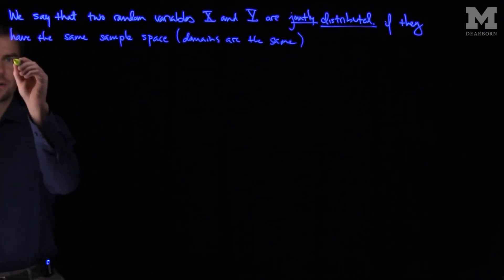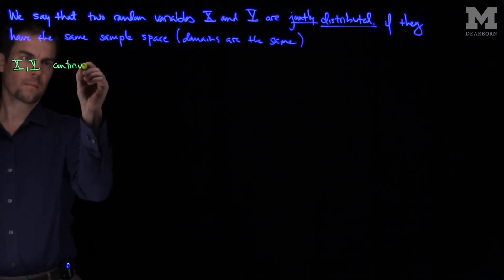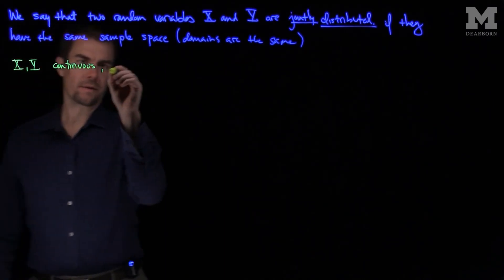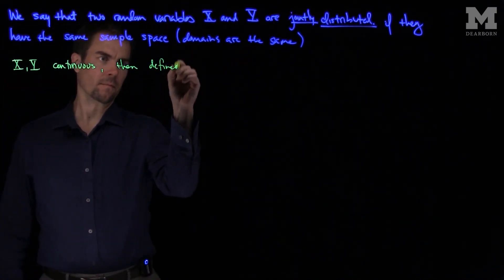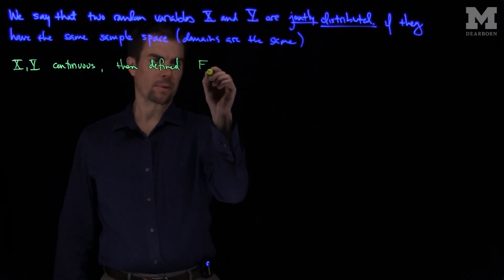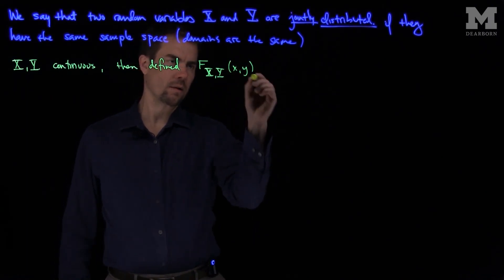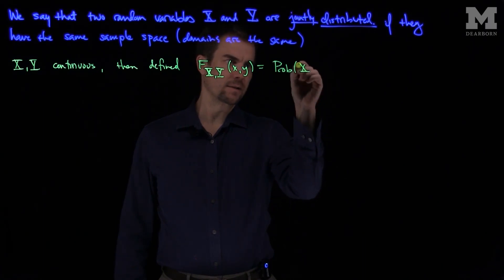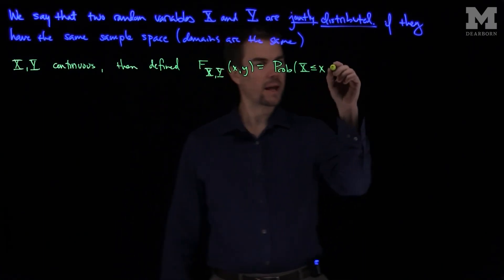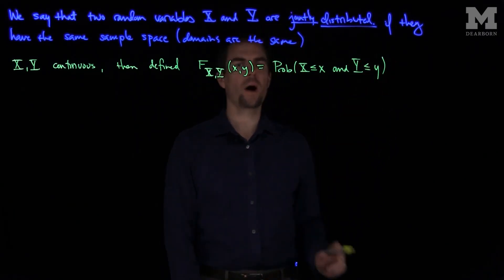If x and y are continuous, then define F(x, y) — this is going to be their cumulative joint distribution function of x and y — as the probability that X is less than or equal to x and Y is less than or equal to y.